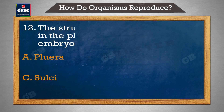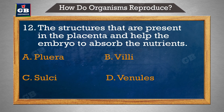The structures that are present in the placenta and help the embryo to absorb the nutrients. A. Plura, B. Villi, C. Salci, D. Venule.